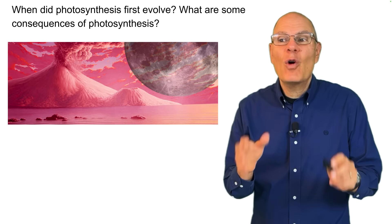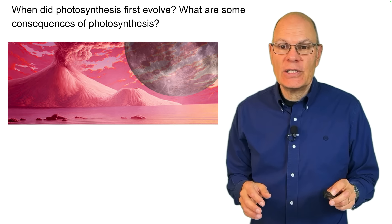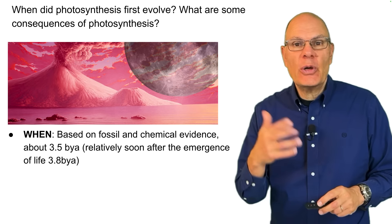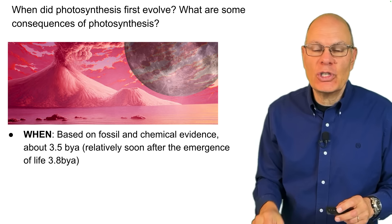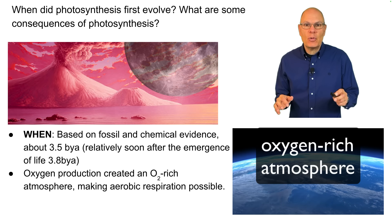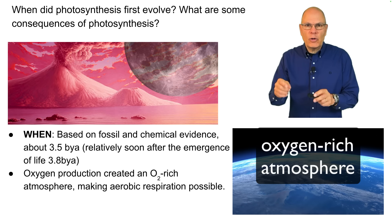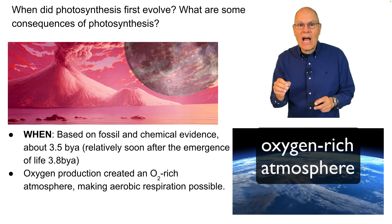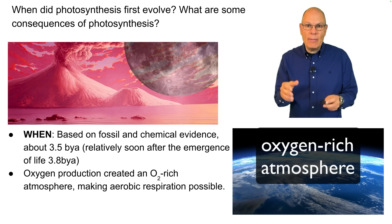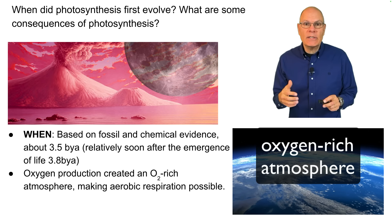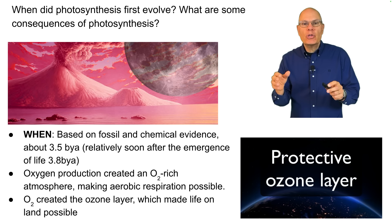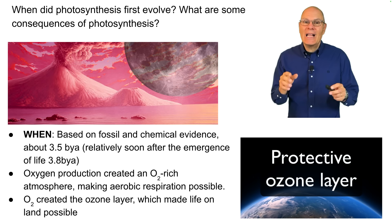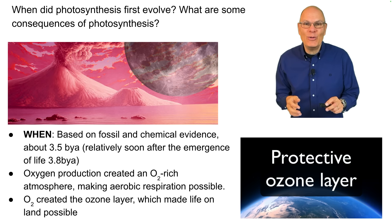When did photosynthesis first evolve, and what are some consequences? Based on fossil and chemical evidence, photosynthesis evolved about 3.5 billion years ago, relatively soon after the emergence of life 3.8 billion years ago. When the Earth first formed, there was no oxygen in the atmosphere. Photosynthesis, which splits water to release oxygen, created the oxygen-rich atmosphere that made aerobic metabolism possible. It also created an ozone layer that shields us from ultraviolet radiation and made life on land possible.